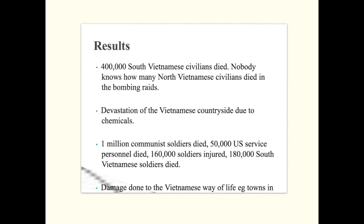So what were the results of the Vietnam War? 400,000 South Vietnamese civilians died, and nobody knows how many North Vietnamese civilians died in the bombing raids. There was devastation to the Vietnamese countryside due to chemicals, 1 million communist soldiers died, 50,000 US service personnel died, 160,000 soldiers were injured, and 180,000 South Vietnamese soldiers died. Damage was also done to the Vietnamese way of life — for example, towns in South Vietnam were hit by drugs.